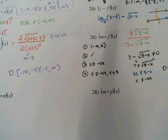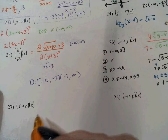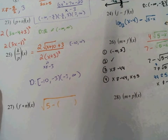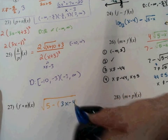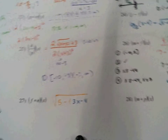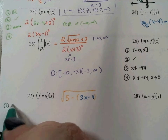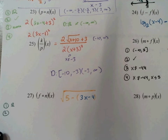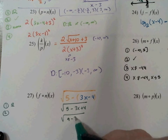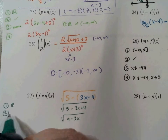Number 27: f of n. f is the square root of 5 minus x, and inside x I put the function n, which is 3x minus 4. Step 1: domain of the interior — 3x minus 4 has a domain of all real numbers, so no restrictions. Step 2: perform and simplify. Inside the square root: 5 minus the quantity 3x minus 4, which simplifies to 9 minus 3x.